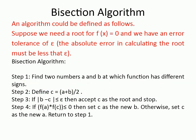Let us see the bisection algorithm. First, find the values of a and b at which the function has a different sign. For example, if f(a) is positive and f(b) is negative, then f(a) multiplied by f(b) is less than zero. Or vice versa, if f(a) is negative and f(b) is positive, the product will again be negative. You need to find such initial guesses a and b.